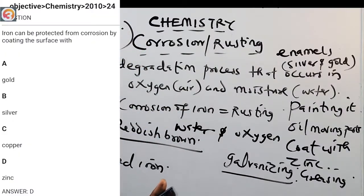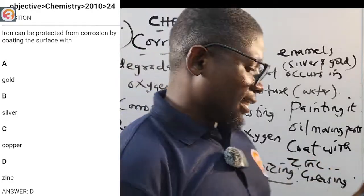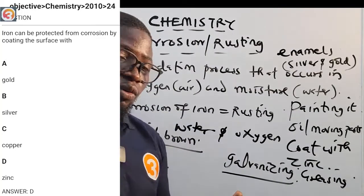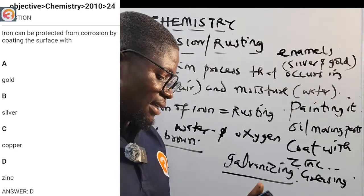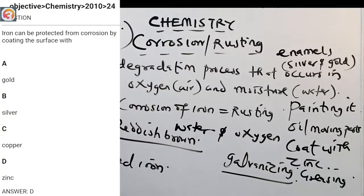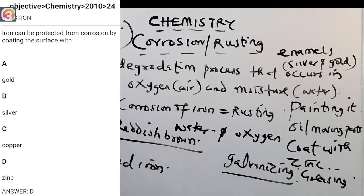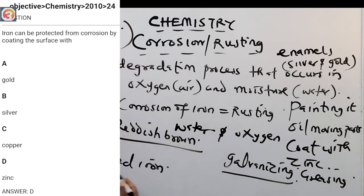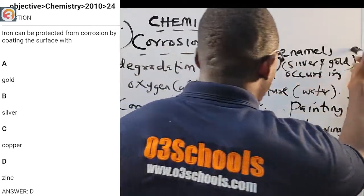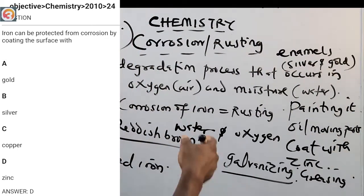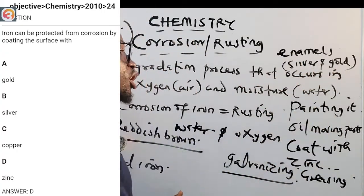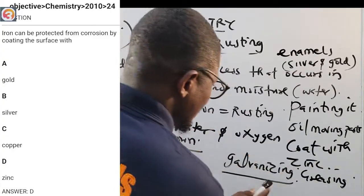Next, 2010 question number 24: iron can be protected from corrosion by coating the surface with what? Options are A: gold, B: silver, C: copper, D: zinc. The correct answer is zinc. That is why we have galvanization — coating iron with zinc gives us galvanized iron.